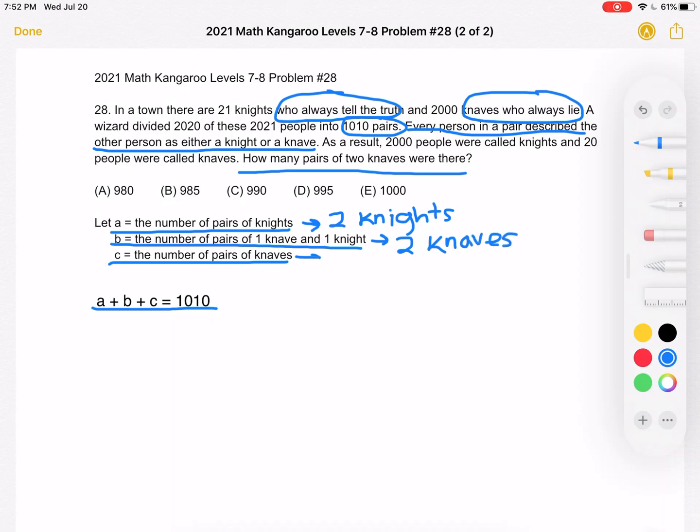And then for C, knaves lie. So each knave in this two knave pair will look at the other knave, see a knave, but lie and say that they saw a knight. So we're going to have two knights as those who are seen. Each person is going to say that they saw a knight.